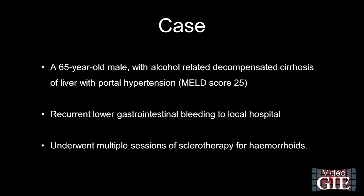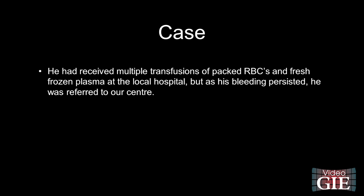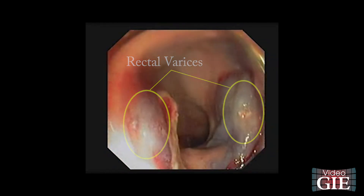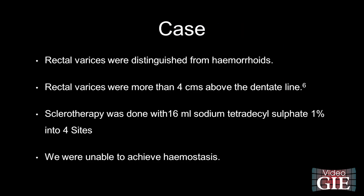A 65-year-old male with alcohol-related decompensated cirrhosis of the liver with portal hypertension, MELD score 25, presented with recurrent lower gastrointestinal bleeding to a local hospital, where he underwent multiple sessions of sclerotherapy for hemorrhoids. He had received multiple transfusions of packed RBCs and fresh frozen plasma at the local hospital, but his bleeding persisted. He was referred to our center for further management. After initial hemodynamic stabilization, a sigmoidoscopy was done which revealed large rectal varices — and not hemorrhoids as previously thought — with active bleeding from two sides.